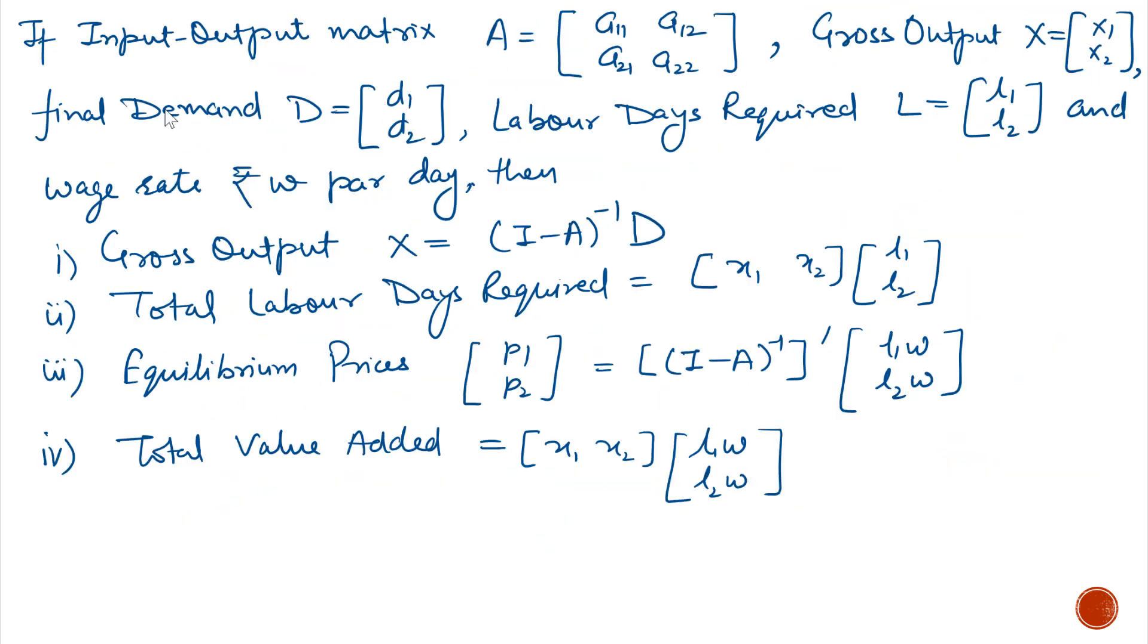Now we will talk about the different formulas used in Leontief Input-Output Model. If the input-output matrix is A with elements A11, A12, A21, A22, gross output is denoted by X equals X1, X2, final demand D1, D2, and the labor days required L1, L2, and wage rates are W rupees per day.